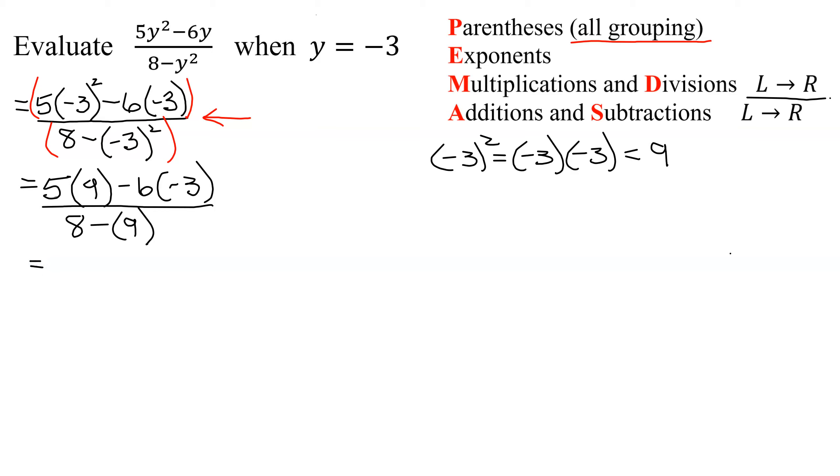So in my numerator, do I have any multiplications? Yes, this is a multiplication and so is this. So I'm going to do this before this. So 5 times 9 is 45. And then minus 6 times a negative 3, a negative times a negative is a positive. 6 times 3 is 18.